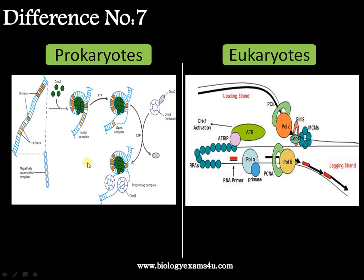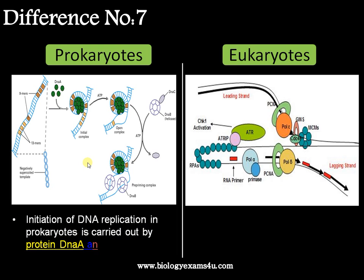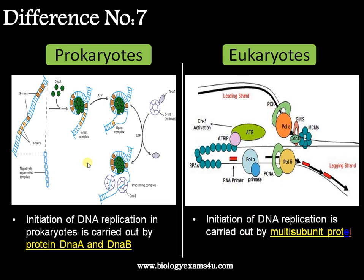Difference number seven is regarding initiation. In prokaryotes, initiation of DNA replication is carried out by proteins such as DnaA and many other proteins. In the case of eukaryotes, initiation is carried out by a multi-subunit protein complex often called the origin recognition complex; a number of proteins are involved in order to initiate DNA replication.